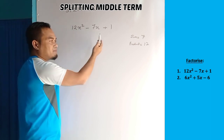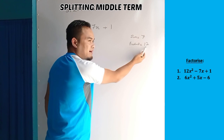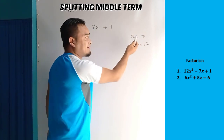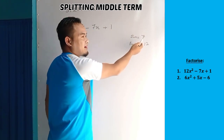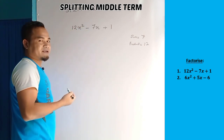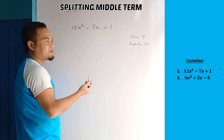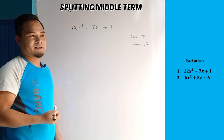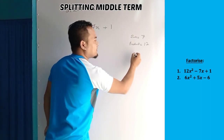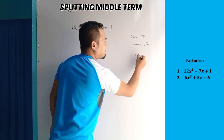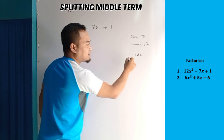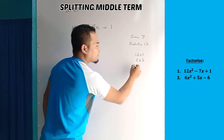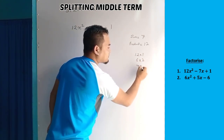So the two numbers we need: they must multiply to 12 and sum to 7. The factor pairs of 12 are: 12 into 1, then 6 into 2, then 4 into 3.